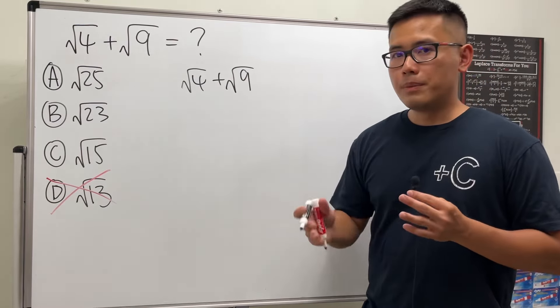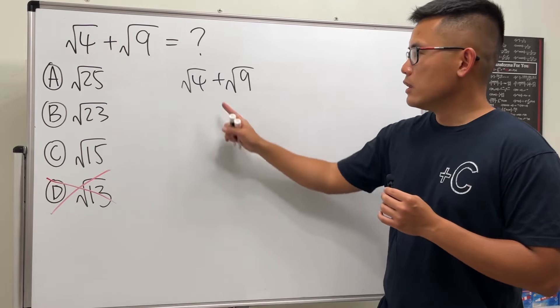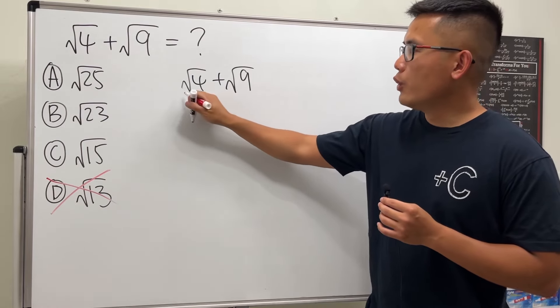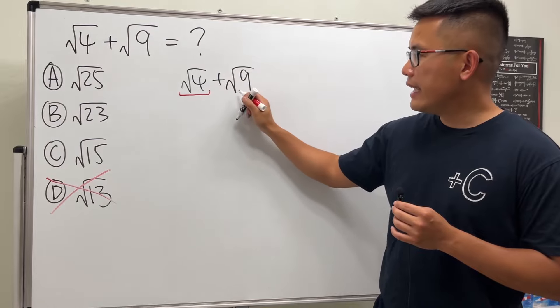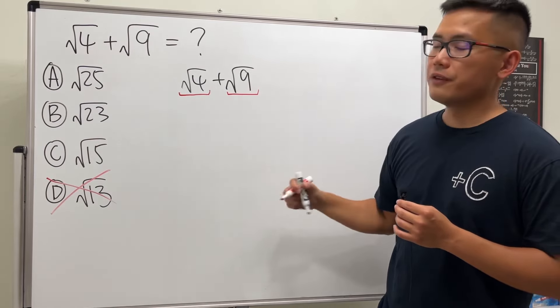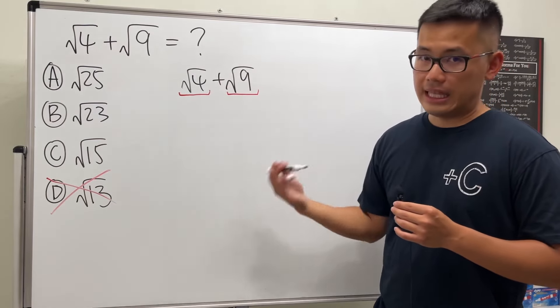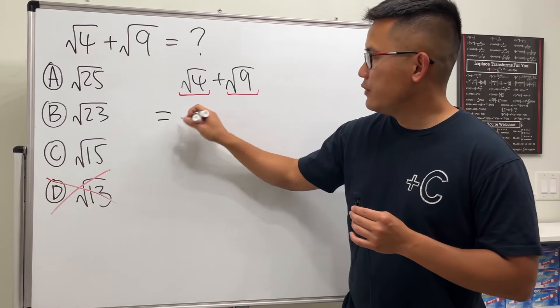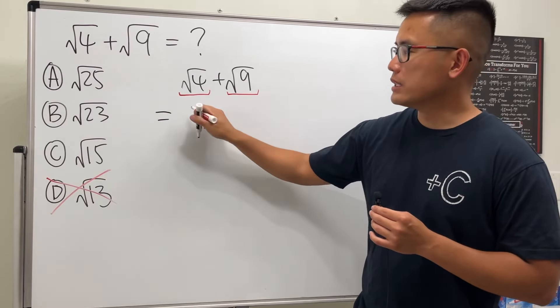This right here is all about the order of operations. We see that we have the square root of 4, we must do this first, and then also the square root of 9. We are going to add at the end. So if you do square root of 4, we will end up with a positive 2 because 2 times 2 is equal to 4.